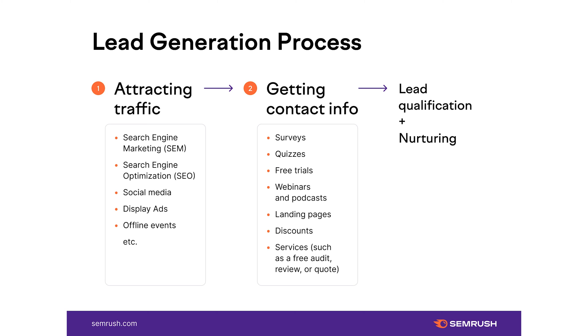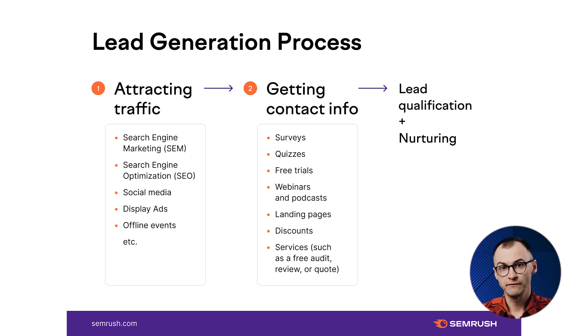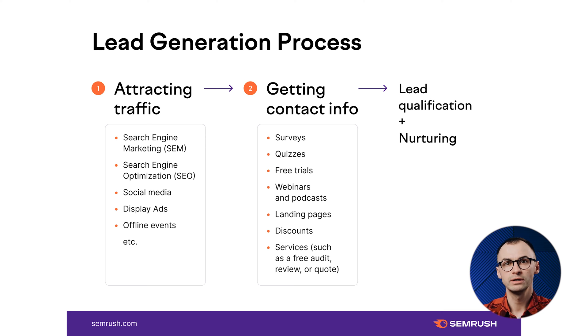Let's divvy up some stages of the natural lead generation process. First, you attract traffic to your website through SEO content, social media, sponsored content, or networking at online and offline events. The next stage is getting users' contact data like email addresses or phone numbers.